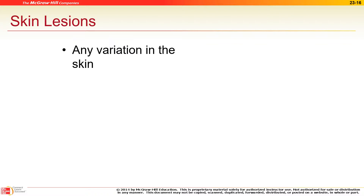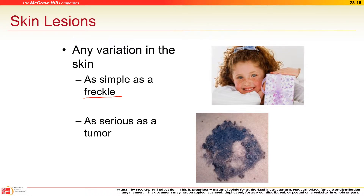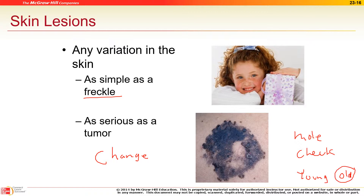Skin lesions — a freckle is just a concentrated area of pigmentation; it's normal unless it starts to change. In nursing homes they photograph freckles and birthmarks and compare over time. If one starts to change, that's the most important warning sign — it may be cancer. If you see a freckle, mole, or birthmark start to change, get it checked out.